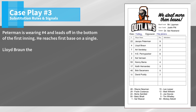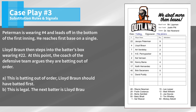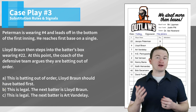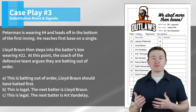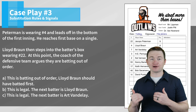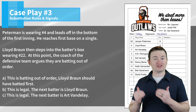Case play number three: Peterman is wearing number 4 and leads off in the bottom of the first inning. He reaches first base on a single. Lloyd Braun then steps into the batter's box wearing number 22. At this point, the coach of the defensive team argues they are batting out of order. The correct answer is B — this is legal and the next batter is going to be Lloyd Braun. Remember, we use the players' names when determining who the proper batter is, and the numbers are only there to help. If they're off, they're off — it's not a big deal. Go with the names.